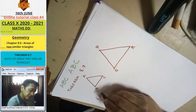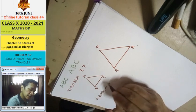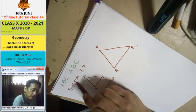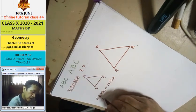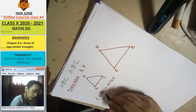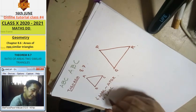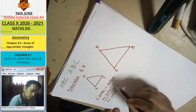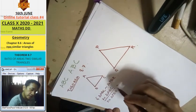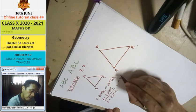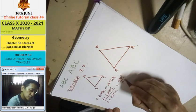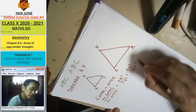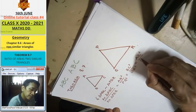If triangle ABC is similar to triangle BQR, then the area of triangle ABC by the area of triangle BQR will be equal to AB squared by BQ squared, equal to BC squared by QR squared, equal to AC squared by BR squared.